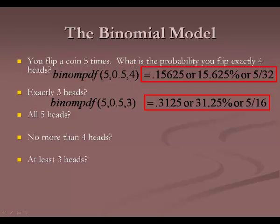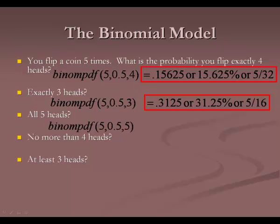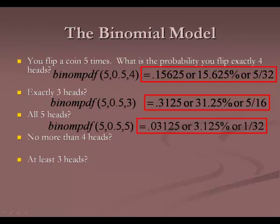Try all five heads: binomPDF(5, 0.5, 5) — 5 for the total, 0.5 for the probability, 5 for how many we want. This gives 0.03125, or 3.125%, which is a 1 out of 32 chance of that happening.